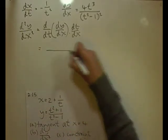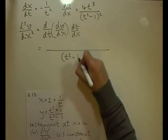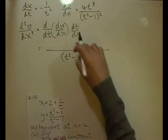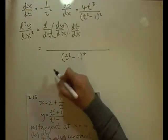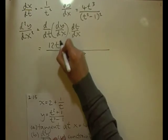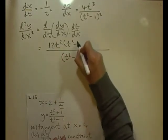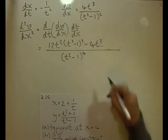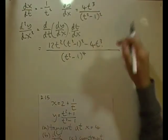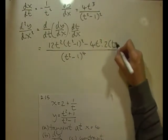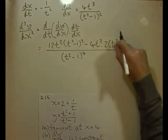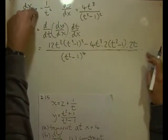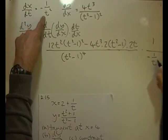The expression dy/dx = 4t³/(t²−1)² is a quotient, so we apply the quotient rule. The bottom squared gives (t²−1)⁴. The numerator is: differentiate 4t³ to get 12t², times (t²−1)², minus 4t³ times the derivative of (t²−1)², which by chain rule is 2(t²−1)×2t = 4t(t²−1). Then multiply by dt/dx = −t².